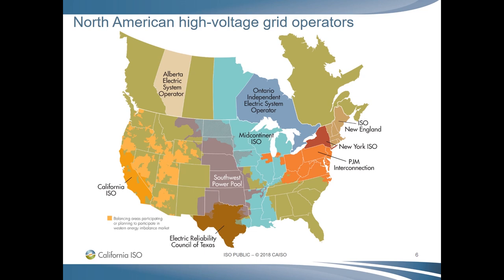As you can see by this map of North America, there are several different energy regions. Though they all have the same goal of maintaining reliability and market efficiency, they all run a little differently. The California ISO is one of nine ISOs, or Regional Transmission Operators, for multi-state grid operators in North America. The California ISO resides in the Western Interconnection and is the fifth-largest of the ISO RTOs in terms of installed generation and miles of transmission lines, and third in terms of population served.